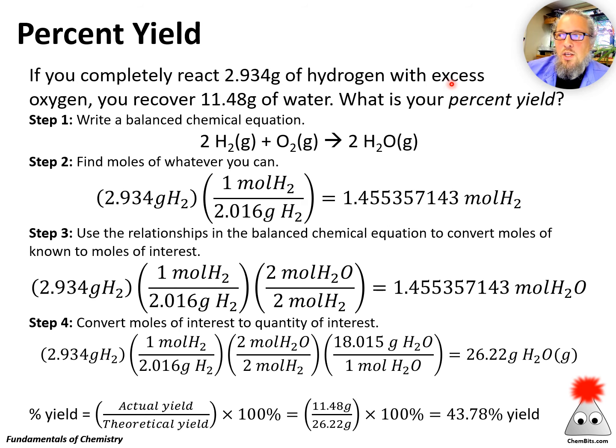One important word here is excess oxygen. So the way I'm stating this problem, this is how much hydrogen I'm using, and I'm using as much oxygen as I want. I've got just loads and loads and loads of oxygen, so it's in excess. It is not going to limit how much product I can make.